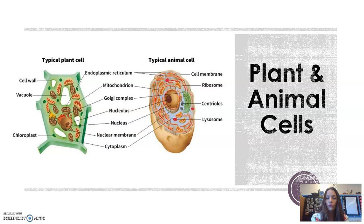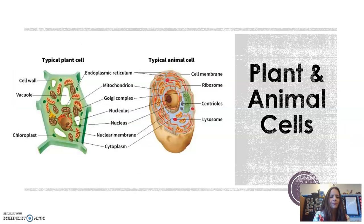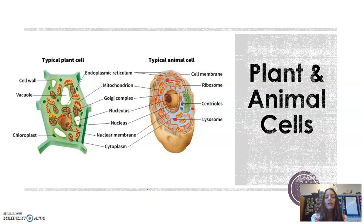When we look at the two, the biggest difference we notice is that the plant cell is much more rigid in structure. That's because of the cell wall that plants have. This cell wall is going to give plants their shape, and plants don't move, so they don't need to be as flexible. But you also see a lot of organelles that overlap.